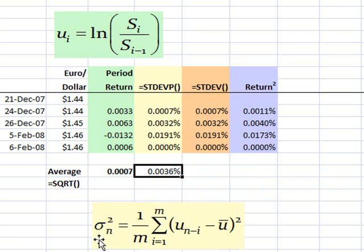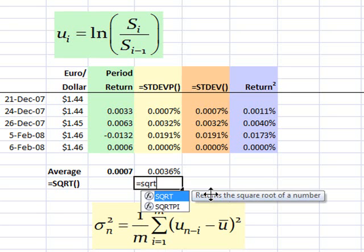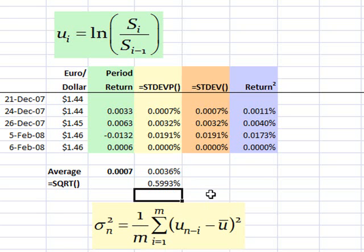But note this formula is sigma squared, so this is a variance. So I need to take the square root of that variance to get the standard deviation, which is the volatility. So I have done it. I have calculated the daily volatility for this exchange rate series, which is almost 0.6%.